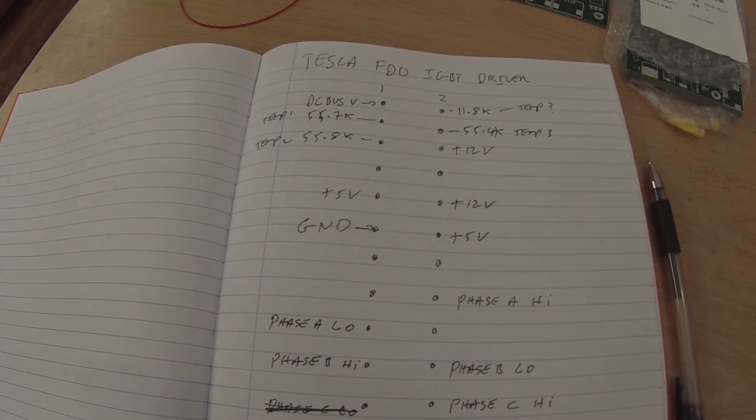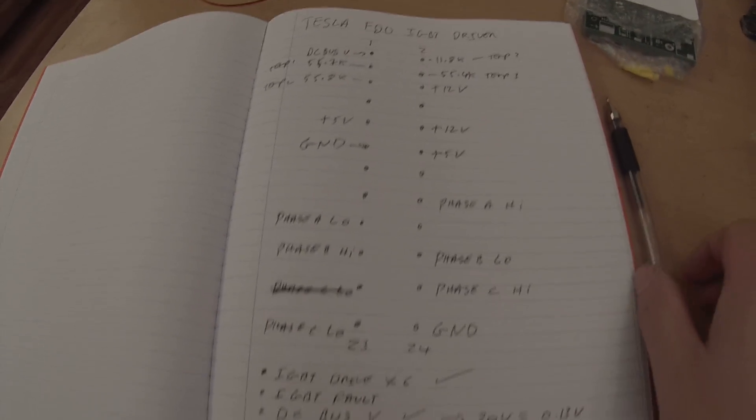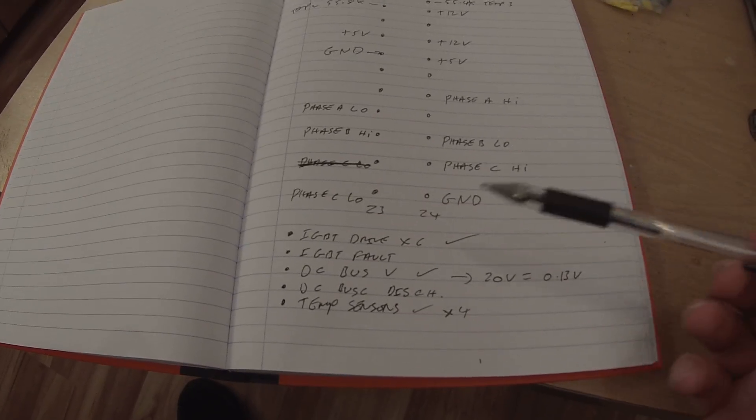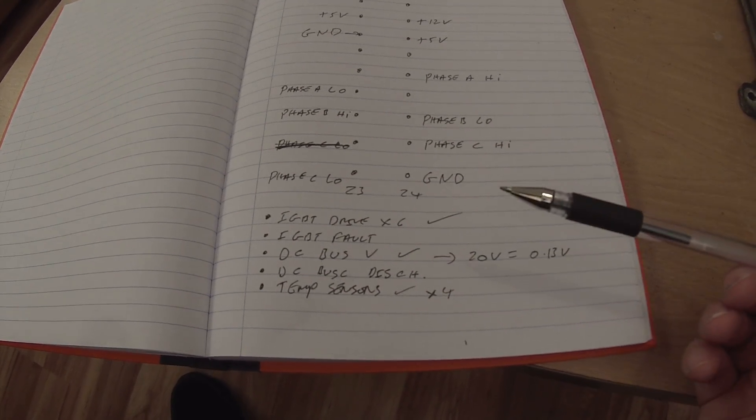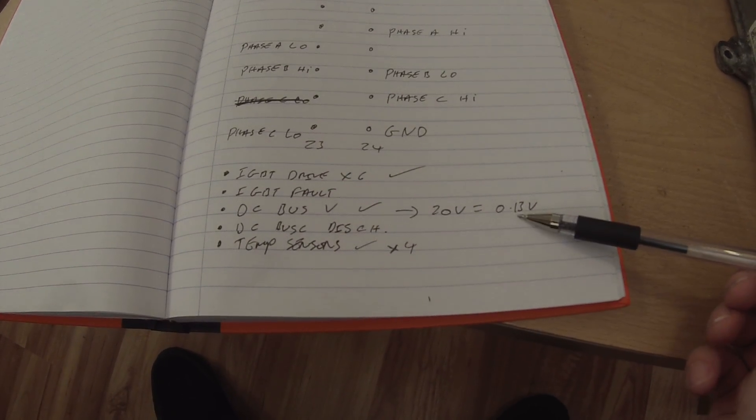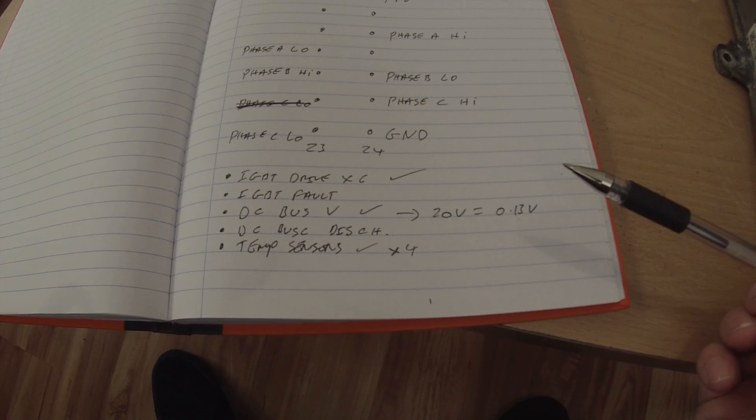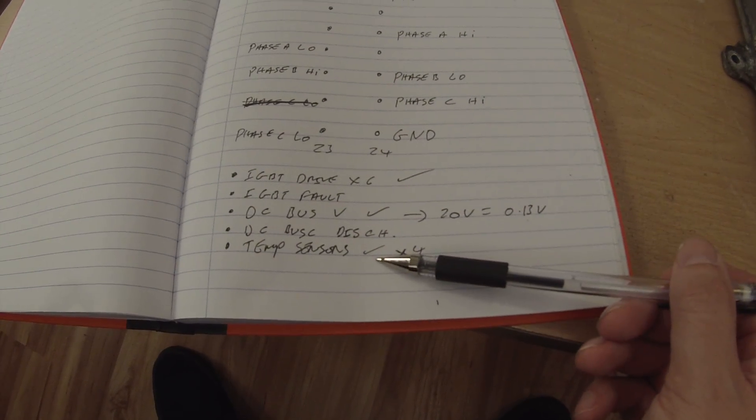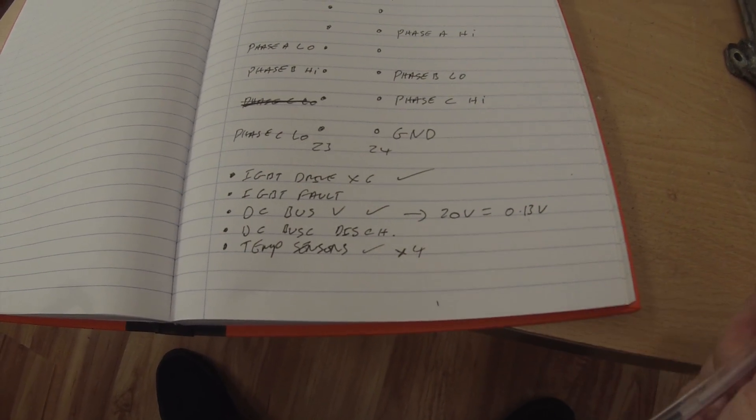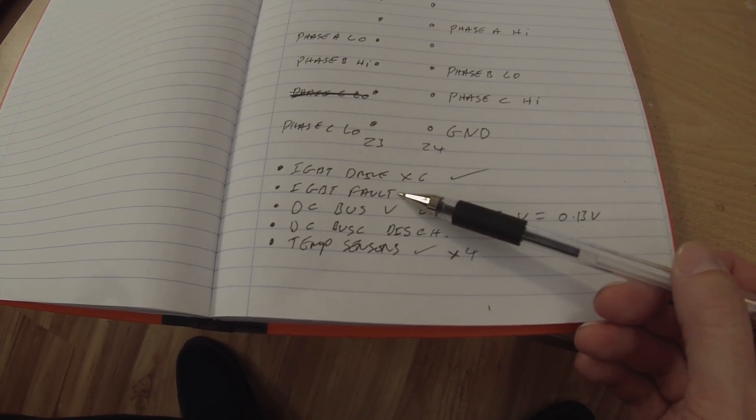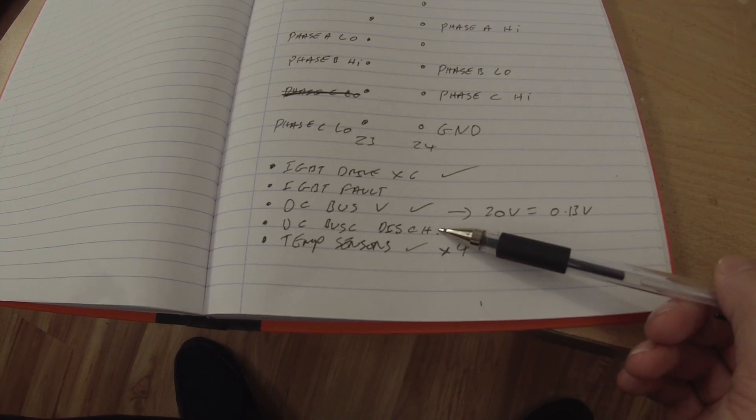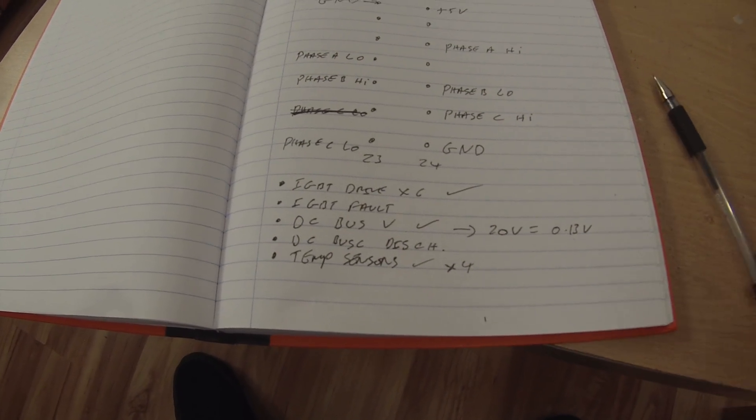We've got our DC bus voltage sensor found as well. So of our list, we've found IGBT drivers, we found DC bus voltage measurement, 20 volts equal to 0.13 volts, and we've found four temperature sensors, definitely three, maybe four. So last things we need to find are the IGBT fault lines and the DC bus discharge control.